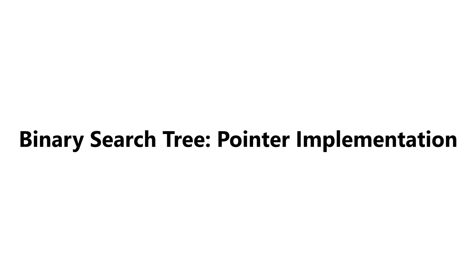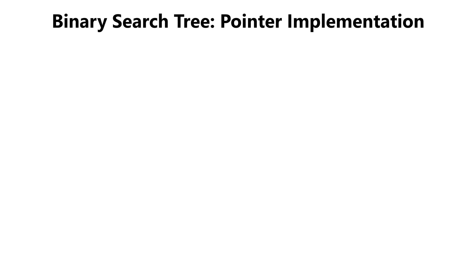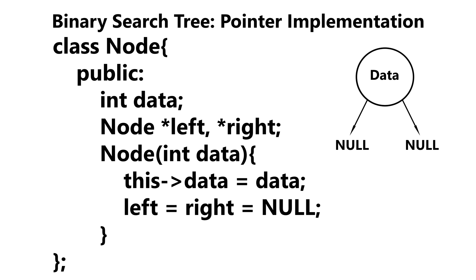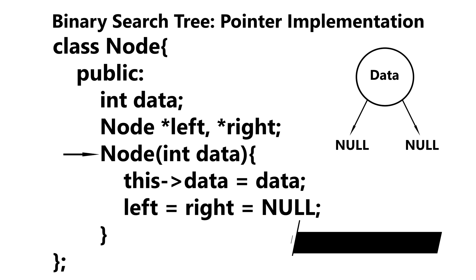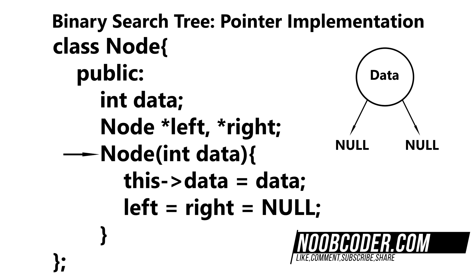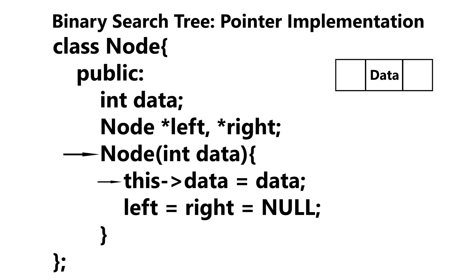To get started, we're going to be creating a helper class called Node. This Node class is going to have the following data members: it's going to have data, which holds the data for our node, and a pointer to the left and right child nodes. We're going to have a one argument constructor, which is getting passed in data. We set our data to the data being passed in, and then we just initialize our left and right pointer to null, to symbolize that this node has no children.